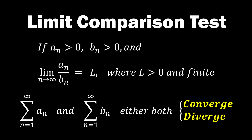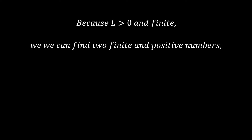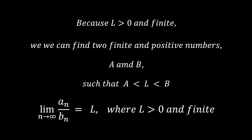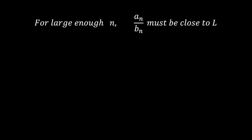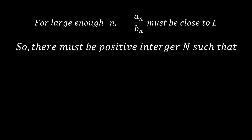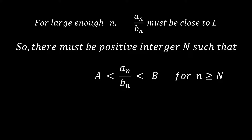Let's take a closer look at why this is the case. Since we define L as positive and finite, we can find two finite and positive numbers, A and B, such that L is greater than A and less than B. As n approaches infinity, the limit of a sub n over b sub n becomes L, implying that for sufficiently large n, a sub n over b sub n must be close to L. Therefore, there exists a positive integer capital N such that a sub n over b sub n is greater than capital A and less than capital B for n greater than or equal to capital N.